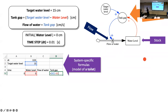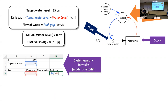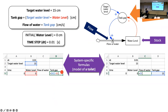Target water level has dollar signs around it — it's the exogenous variable — and the actual water level for this time step is the current row in column B. That gives us the tank gap. In a second, we'll put tank gap into the flow. The formulas specific to the toilet are just those two; the rest is generic and applies to any stock-and-flow model.